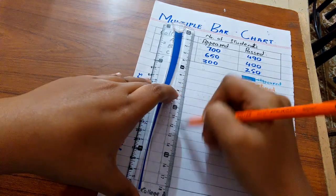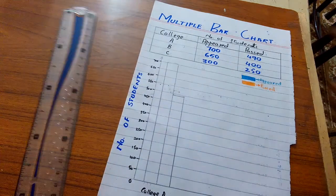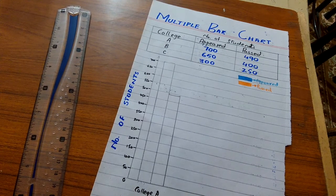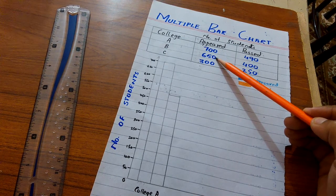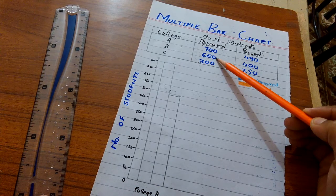Make sure the width of all bars are equal. Now for college B, first of all I am going to construct a bar for the students who have appeared in exam.